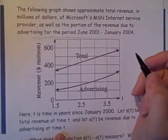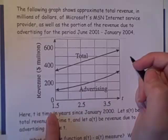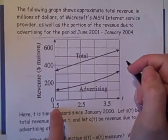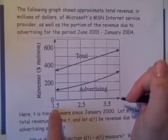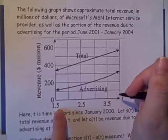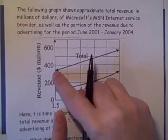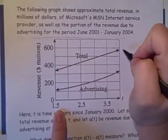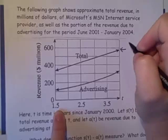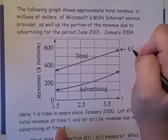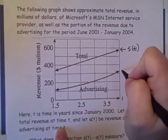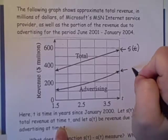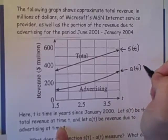A couple things to notice about this graph. First of all, we're used to our graphs starting at t equals zero, but this graph starts at t equals 1.5. And then this top graph, this is our total revenue, this is our s(t). And the bottom graph, this is our a(t).